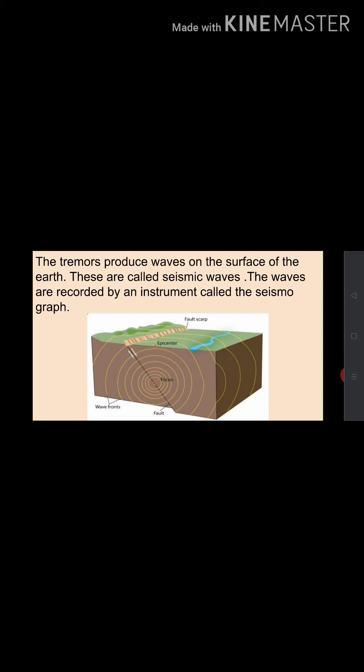An earthquake produces waves on the surface of the earth. These waves are called seismic waves. The waves are recorded by an instrument called a seismograph. As you can see in the picture, the earthquake produces seismic waves on the surface of the earth, and these waves are recorded by a seismograph.